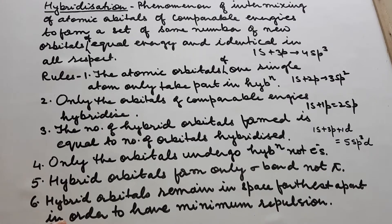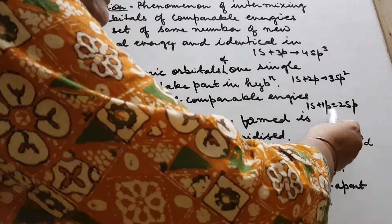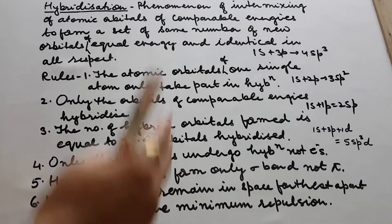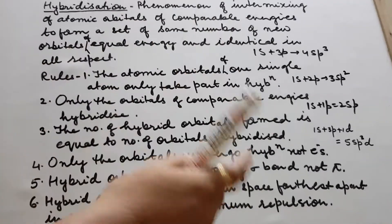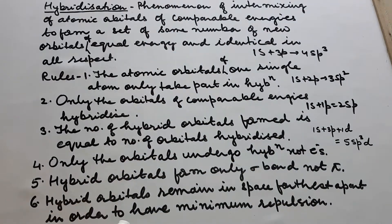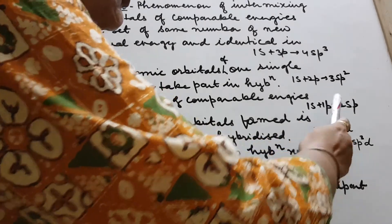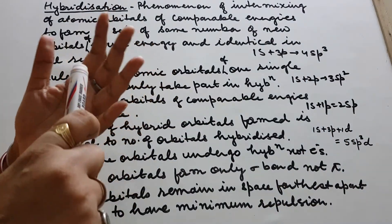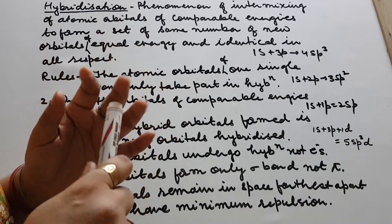When suppose we have 1s and 1p orbitals combining, they will give rise to the same number of new orbitals — means two. And those two which have combined will be identical, same in all respects. So they will give rise to two sp orbitals, same in terms of energy plus all other properties.